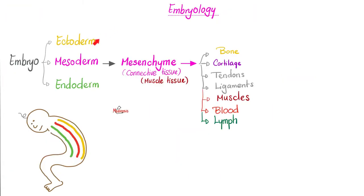Ectoderm is for the epidermis of your skin and your nervous system. Endoderm is for the epithelium that lines your gut and your respiratory system, etc. Mesoderm is in between — 'meso' means between. What's in between? My gut and the epidermis of the skin on my back — well, almost everything: bones, cartilages, tendons, ligaments, muscles, blood, lymph. Since joints are an articulation between two bones, joints belong to the group of the mesoderm.